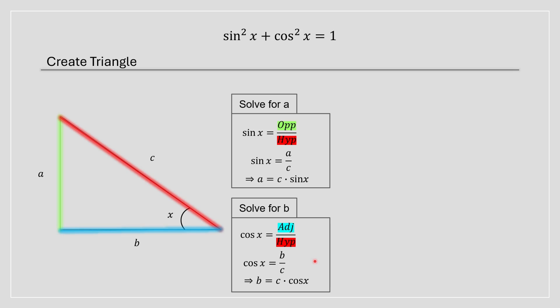We're then going to apply the Pythagorean theorem, more precisely this formula. So we're going to replace our a and b terms into this formula right over here, and we're then going to simplify this by distributing the square term.